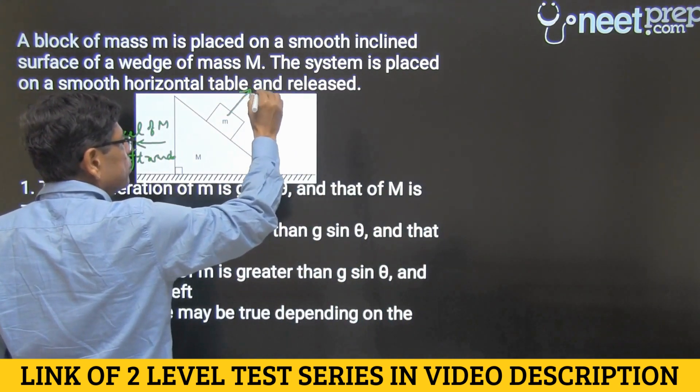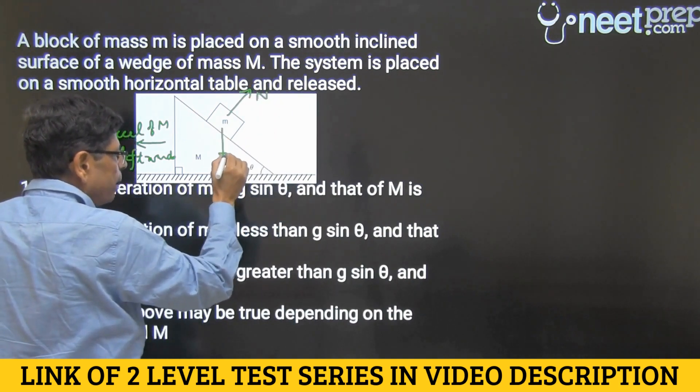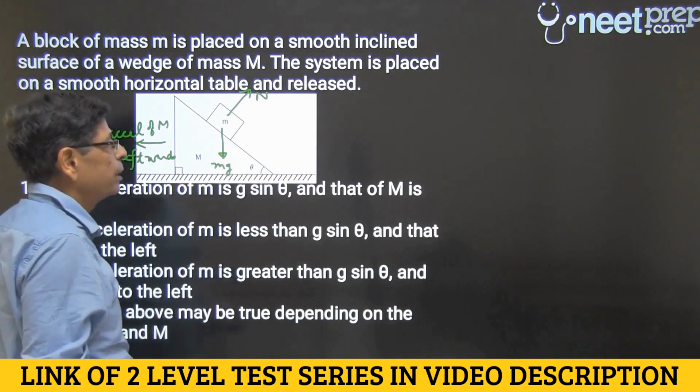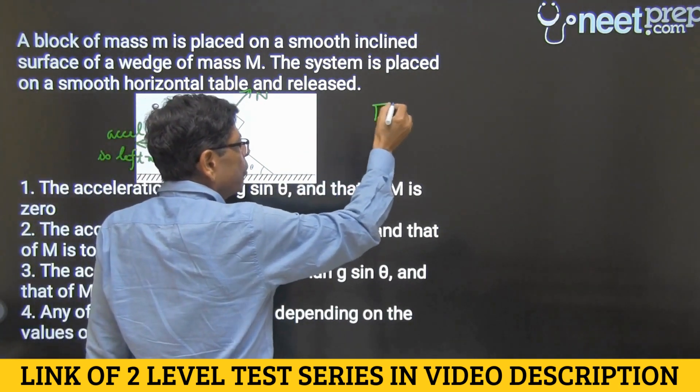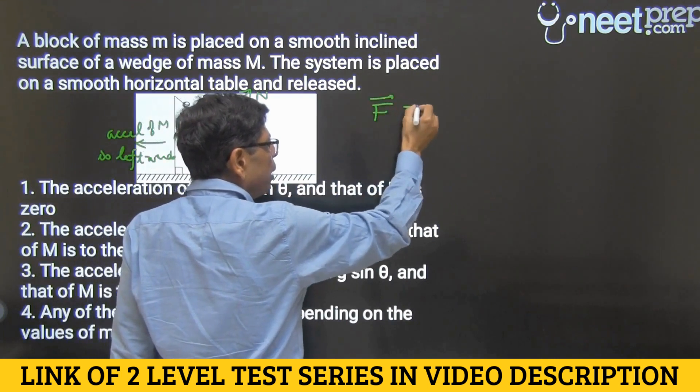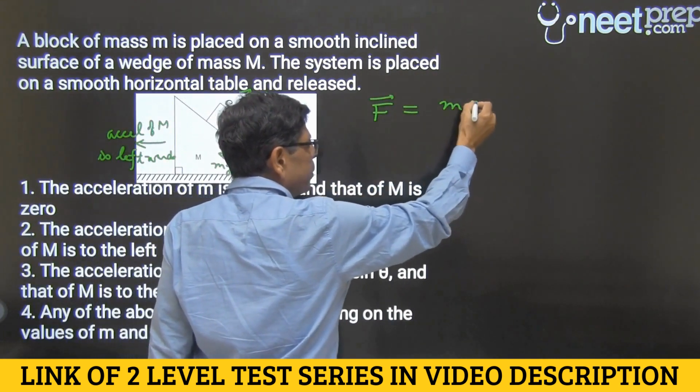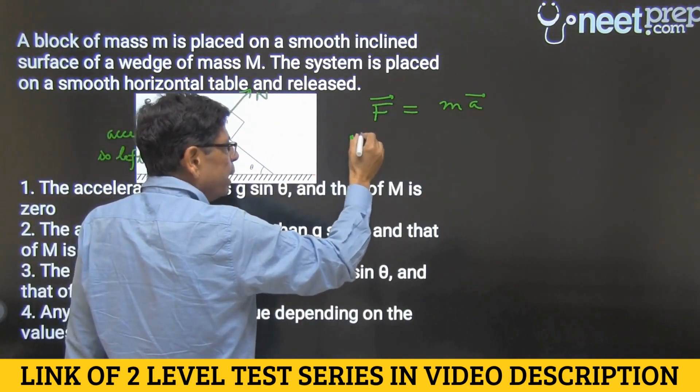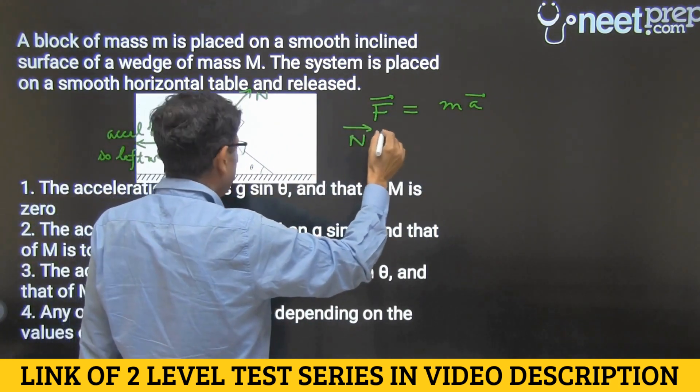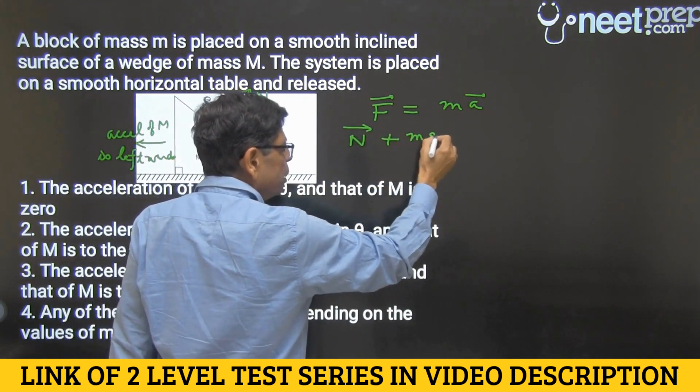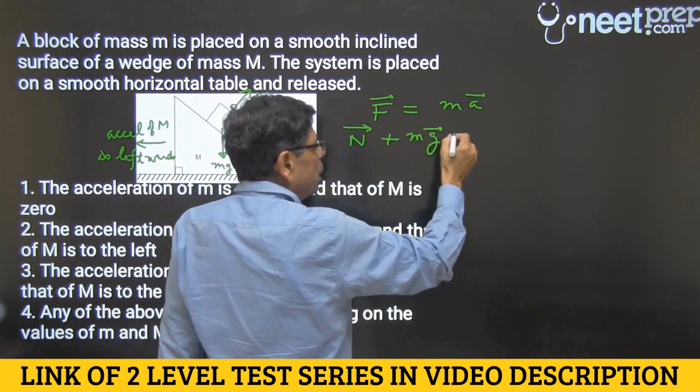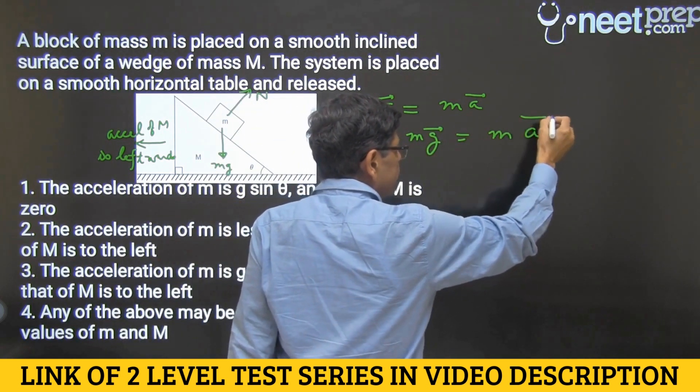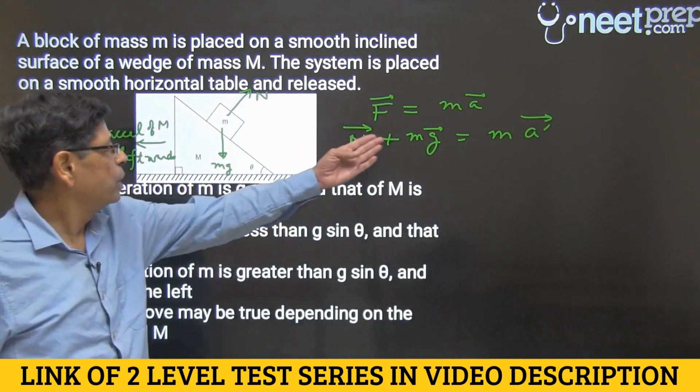Let's write Newton's second law in vector form. So we have F equals ma, that's the statement of Newton's second law. F is the net force acting, so in vector form it would be written like this: n plus mg equals mass into acceleration. We'll call it a dash vector, so that is Newton's second law applied to chota m.